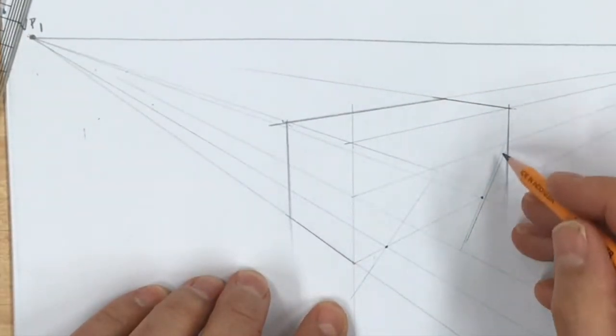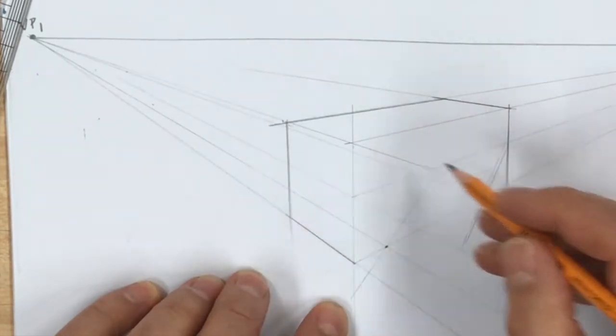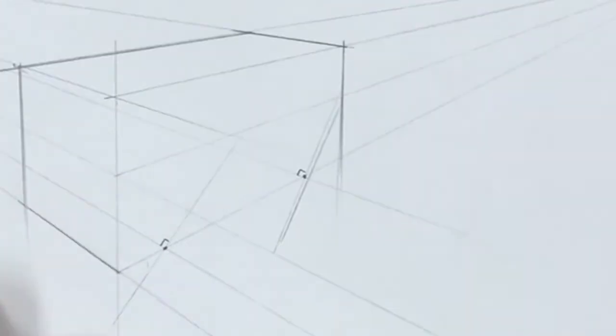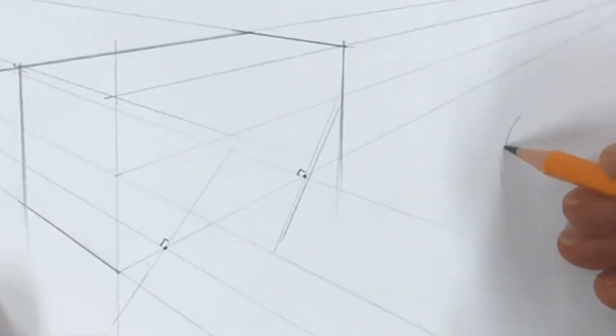You can see they're slightly different angles because they are going at slightly different angles to the vanishing point, but that is 90 degrees to there and that is 90 degrees to there. Now when you've got an ellipse, you have a major axis and the minor axis.